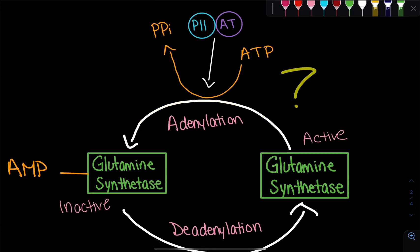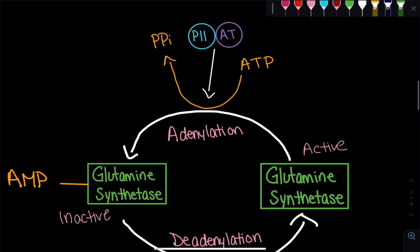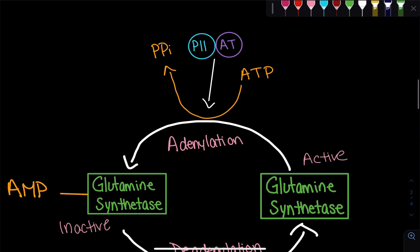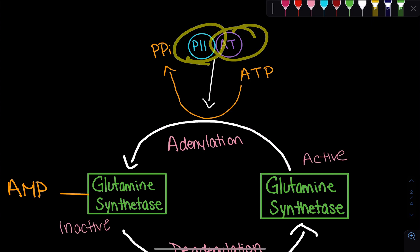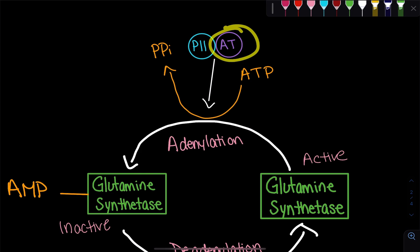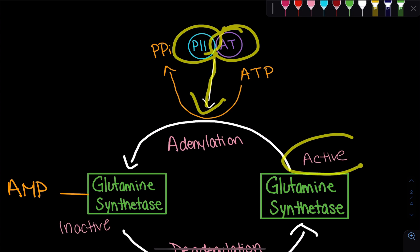The enzyme that catalyzes this adenylation reaction is AT — adenyl transferase. Adenyl transferase is bound to a protein called the P2 protein. When this AT (adenyl transferase) enzyme is bound to that P2 protein, it is able to catalyze the reaction of going from the active to the inactive form.